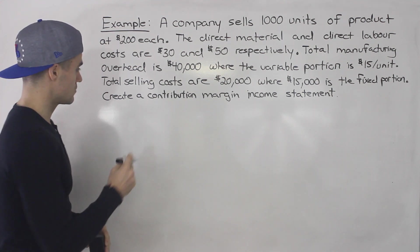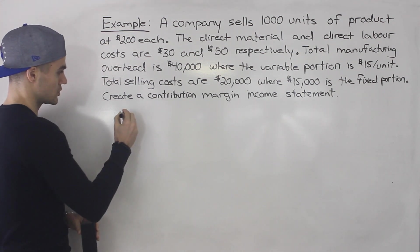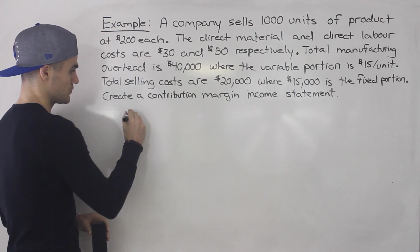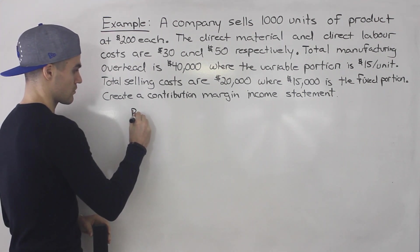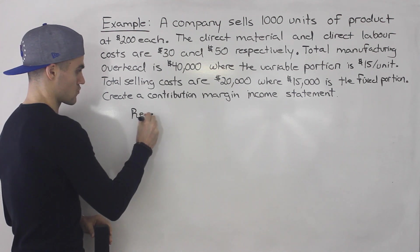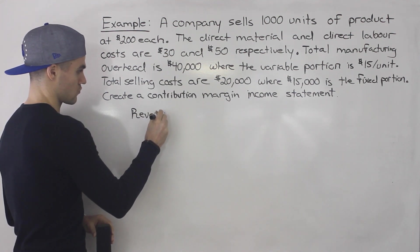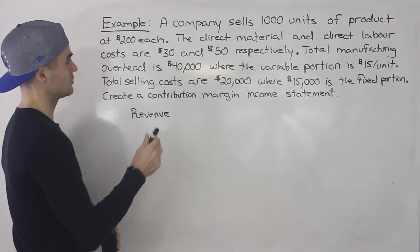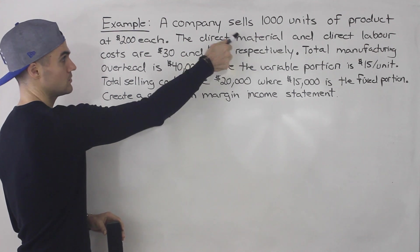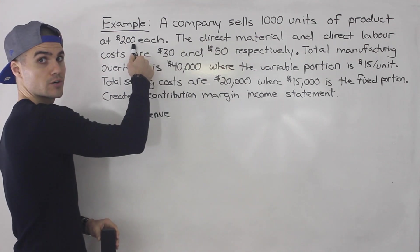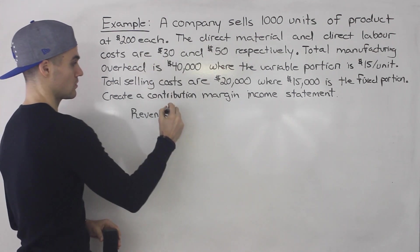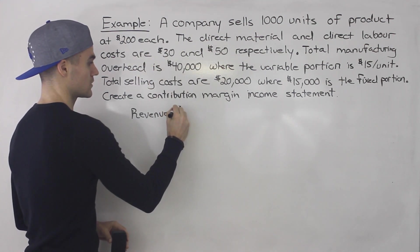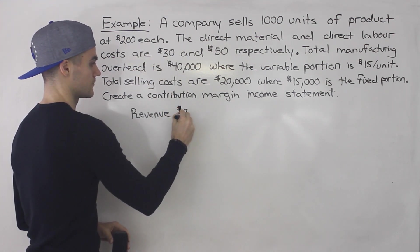For a contribution margin income statement, we start with revenue. We're selling 1,000 units at $200 each, so that gives us $200,000.